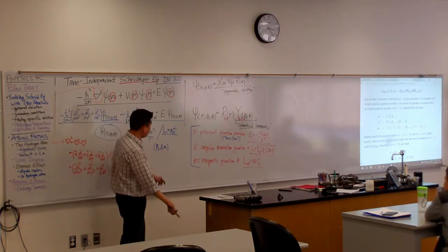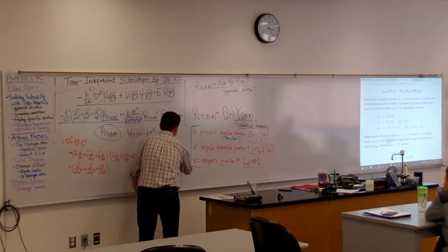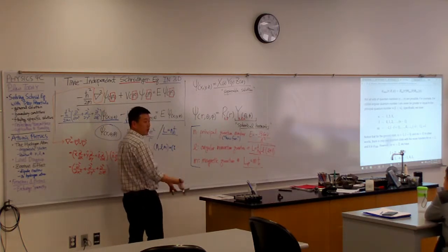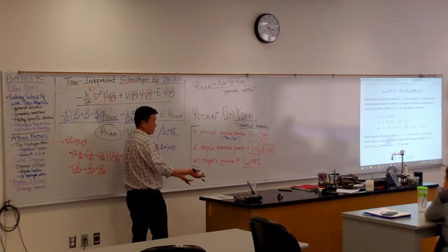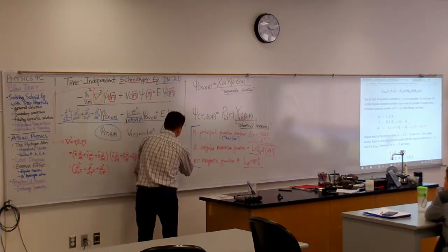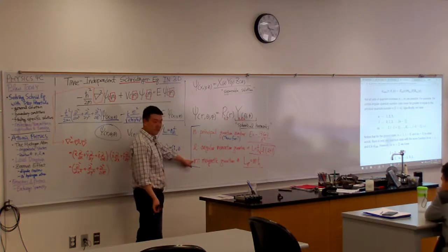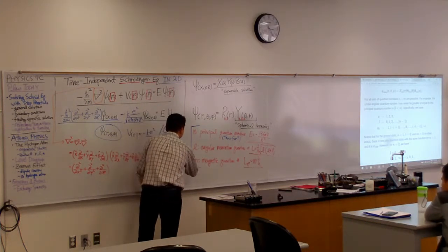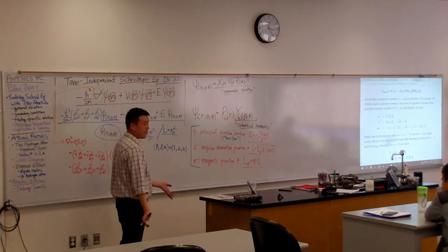So, if you have N equals one, that's kind of it. That's the only state because the only allowed value of L is zero. And the only allowed value of M is plus minus zero. That's the only allowed state.